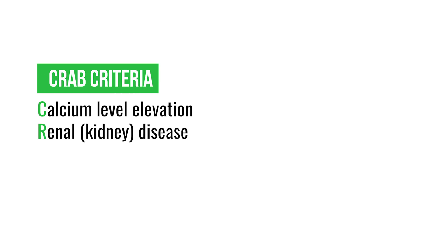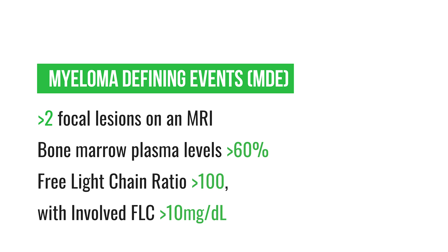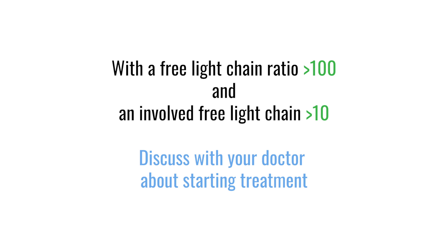The myeloma defining events, as recently updated, include the CRAB criteria — hypercalcemia, renal disease, anemia, and bone disease — as well as several additional myeloma defining events: focal abnormalities on MRI, bone marrow plasma cell percentage above 60%, and a free light chain ratio over 100 with the involved light chain being 10 milligrams per deciliter or greater. The free light chain ratio has been characterized as a myeloma defining event in its own right.